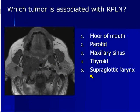So which tumor is associated with lateral retropharyngeal lymphadenopathy? Is it floor-of-the-mouth cancers, parotid cancers, maxillary sinus tumors, thyroid cancers, or supraglottic larynx? Is it one, floor-of-mouth? Two, parotid cancers? Three, maxillary sinus cancers? Four, thyroid cancers? Or five, supraglottic cancer?